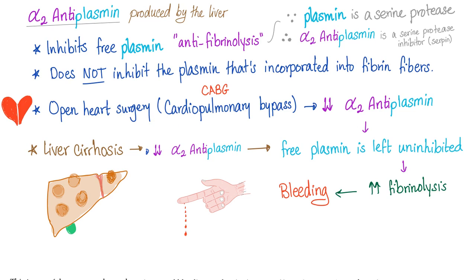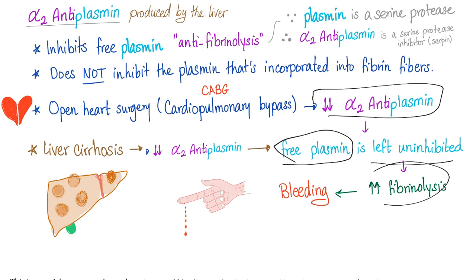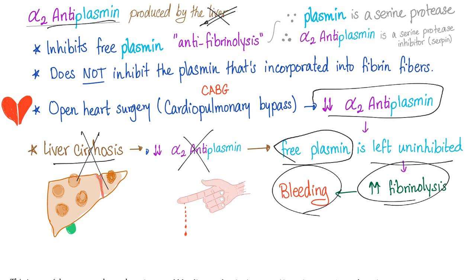If you have open heart surgery — what fancy doctors call CABG, the coronary artery bypass graft — this will lead to decreased alpha-2 antiplasmin. When you decrease the antiplasmin, free plasmin is left uninhibited, plasmin will cause fibrin lysis, and you may bleed. Also, if you have liver cirrhosis, since alpha-2 antiplasmin comes from the liver, when you have a liver problem your liver is compromised and you won't produce alpha-2 antiplasmin, so plasmin will have its way, leading to bleeding. That's one of the reasons we have increased bleeding tendencies in liver disease — not the only reason, but one of them.